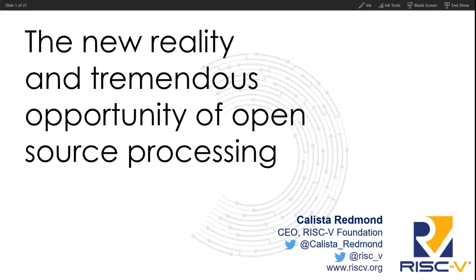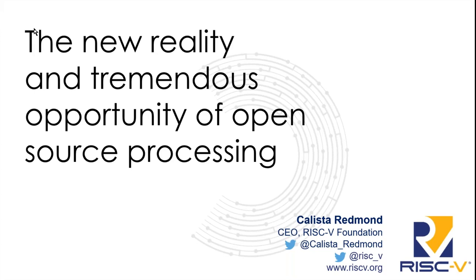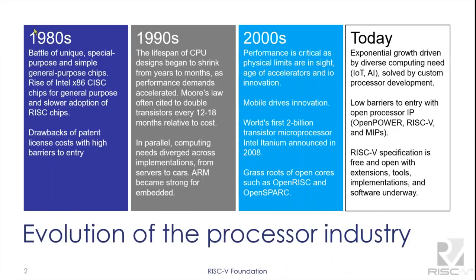So let's start with the introductory presentation. We're going to take a trip down memory lane and have a look at some of the highlights of processor architecture over the last 40 years, starting with the 1980s. Back then there was a very interesting, lively debate between rival architectures — which was the best architecture?